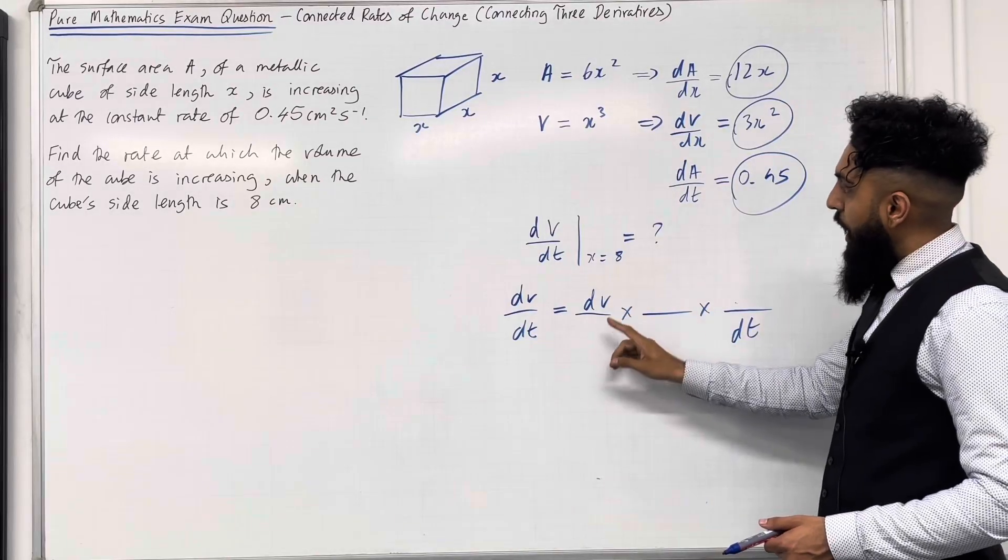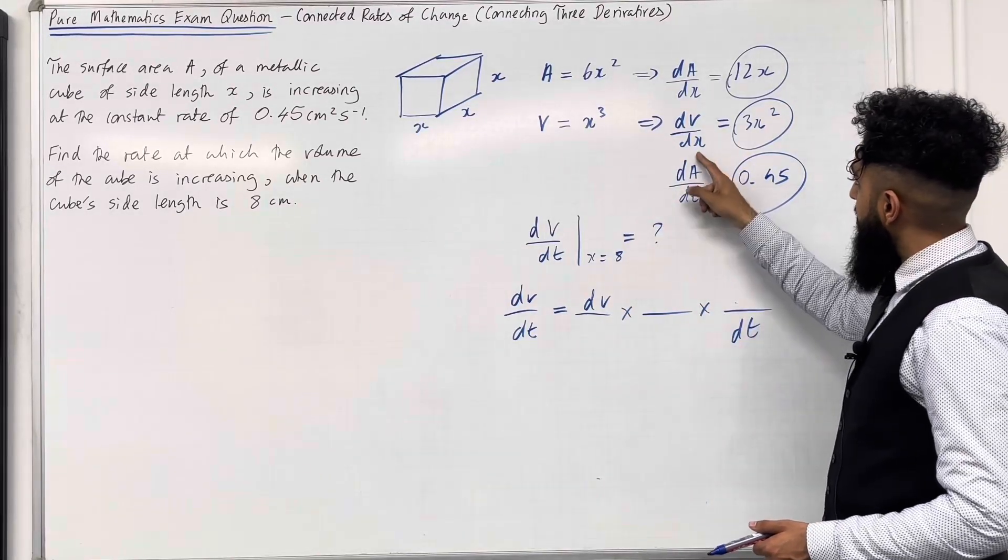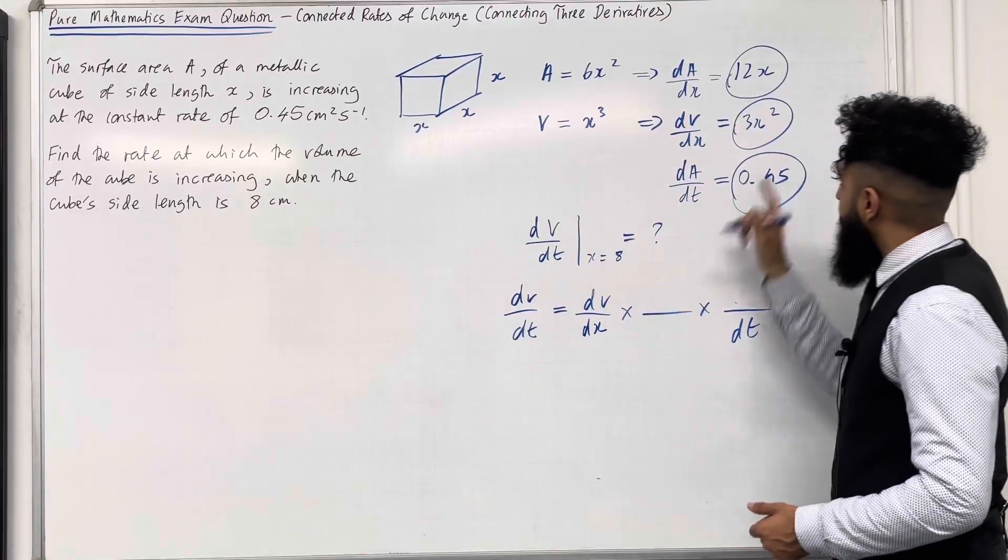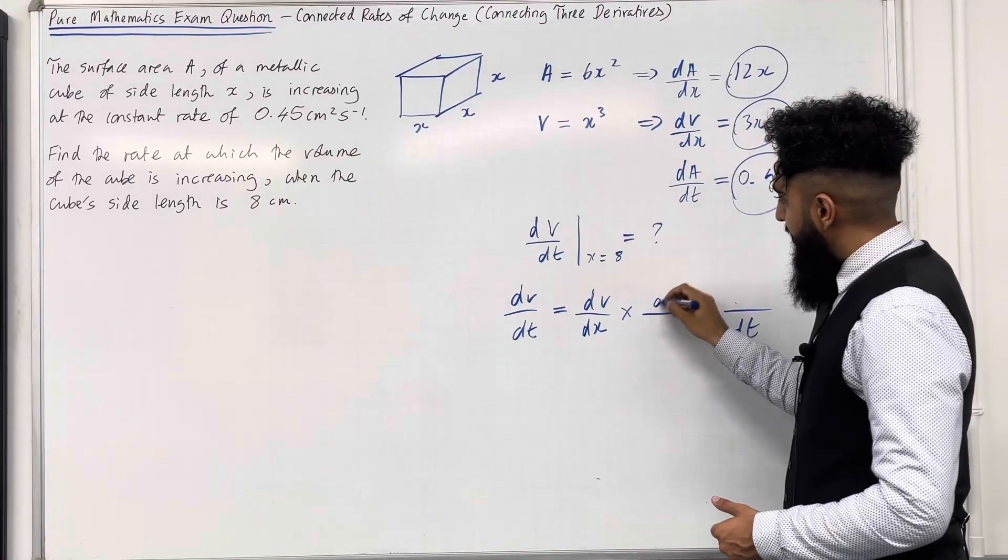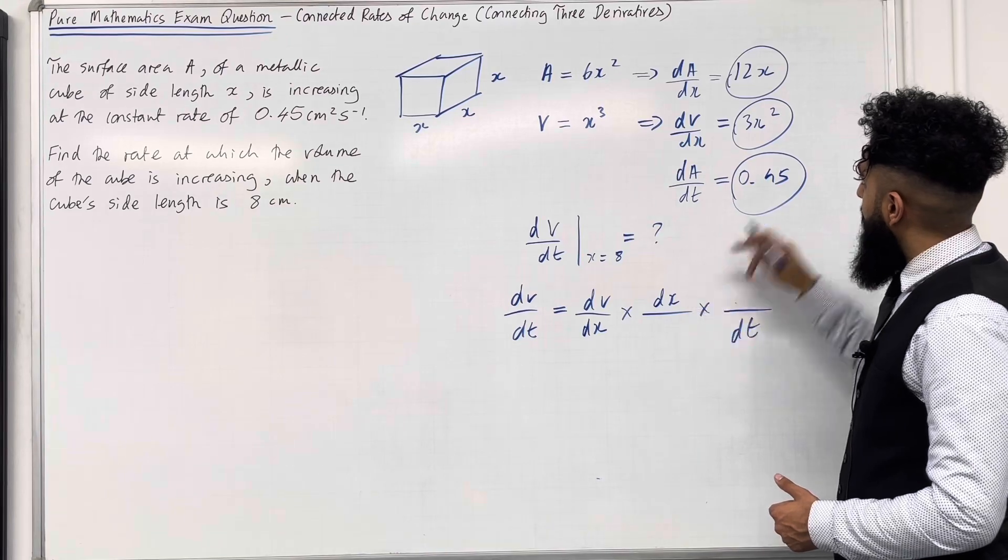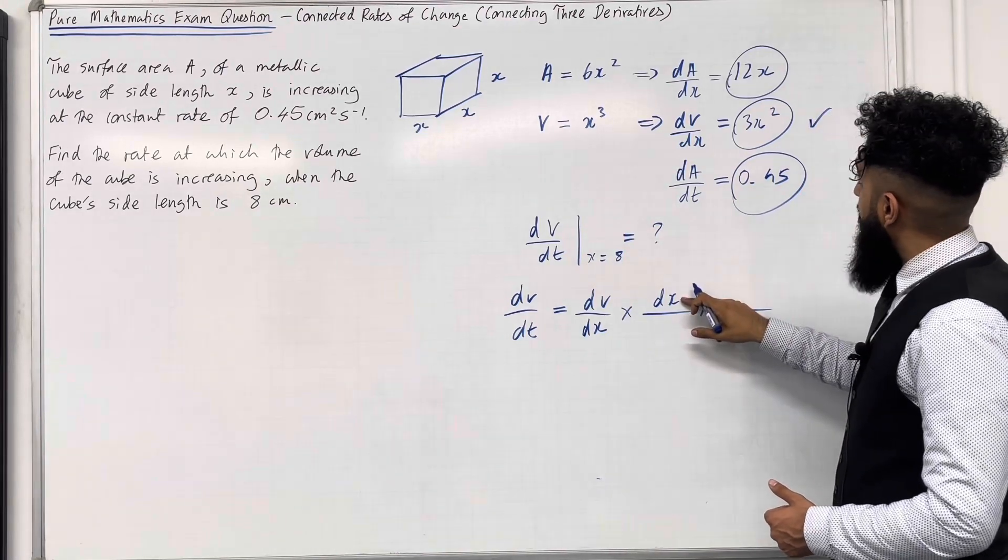So I should have dV over, let's have a look, dx. I know that that one there is 3X squared. Then I must put a dx over here so that these two cancel. So dx over, this one's used up, over dA.